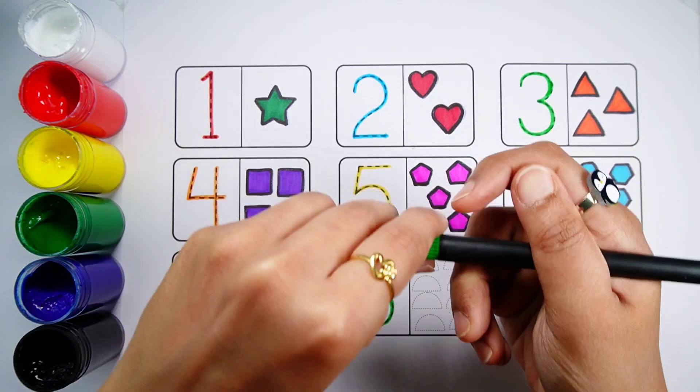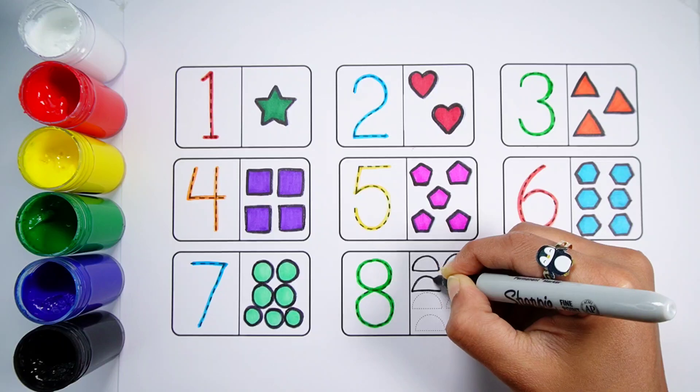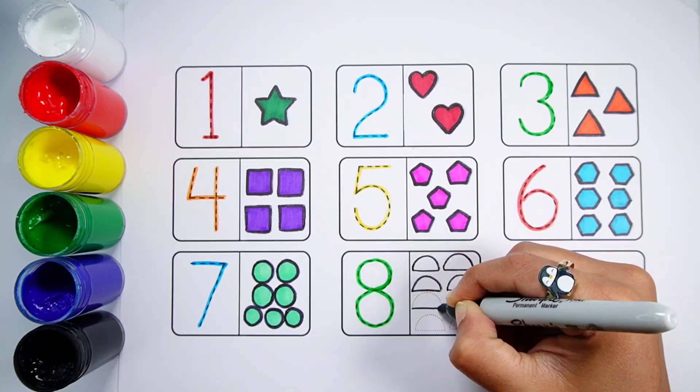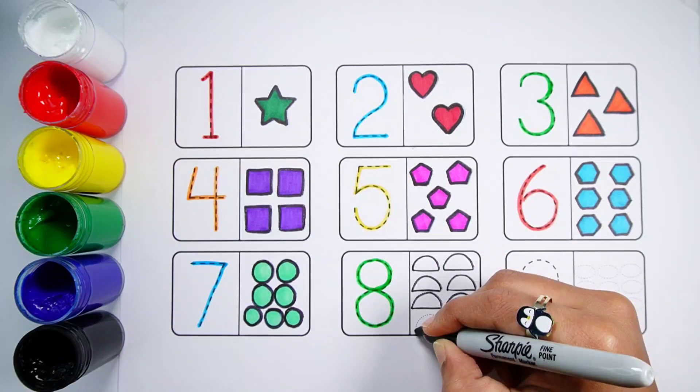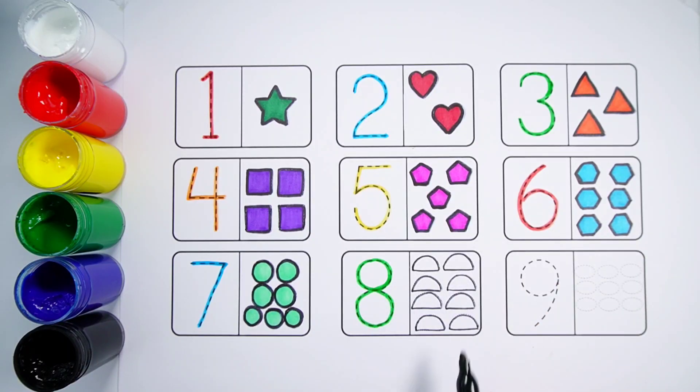Number 8. One Two Three Four Five Six Seven Eight, Eight Semi Circles.